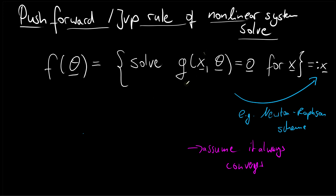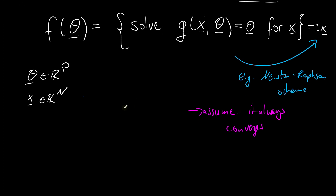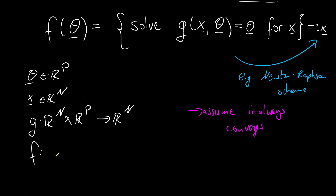Let's look at the dimensionalities involved. The input theta is a p-dimensional vector. The vector x is an n-dimensional vector, and the function g is our optimality criterion which maps from an n-dimensional space times a p-dimensional space to an n-dimensional space. As a consequence, the wrapper function f — which wraps the Newton-Raphson scheme — maps from the p-dimensional space to the n-dimensional space, solving the high-dimensional root finding problem given an input theta.